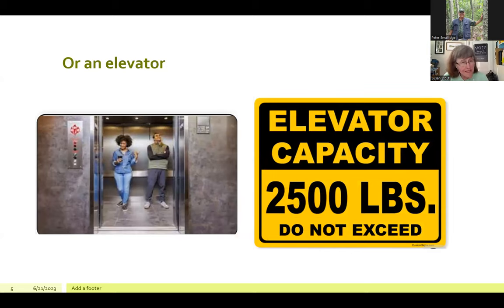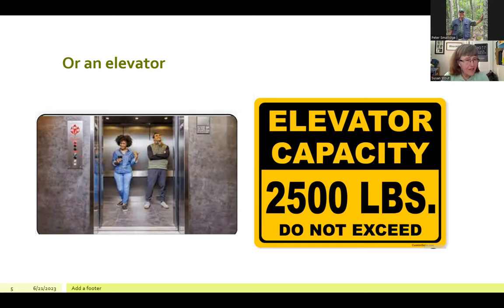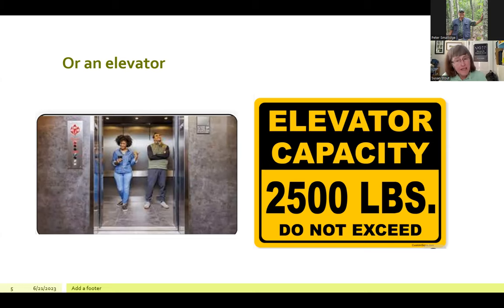A similar analogy: when you're on an elevator, there's almost always a sticker telling you the capacity. The school bus capacity is given in number of people and acknowledges significant variation in people's size, whereas elevator capacities are often expressed in weight. So in a crowded elevator, you can look around at the size of people and decide whether you want to wait for another, based more on the sum of what you see than on a simple count.